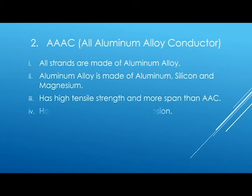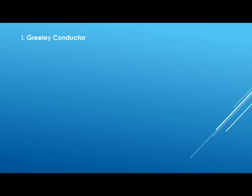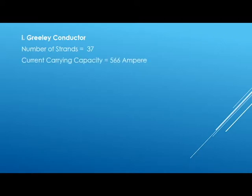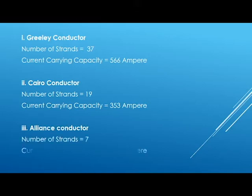AAAC also has high resistance against corrosion. Examples of AAAC conductors are Greely, Cairo, and Aliens. Greely conductor is mostly used for 500 kV transmission lines — the number of strands is 37 and its current carrying capacity is 566 amperes. Cairo conductor has 19 strands and a current carrying capacity of 353 amperes. Aliens conductor has 7 strands and a current carrying capacity of 227 amperes.